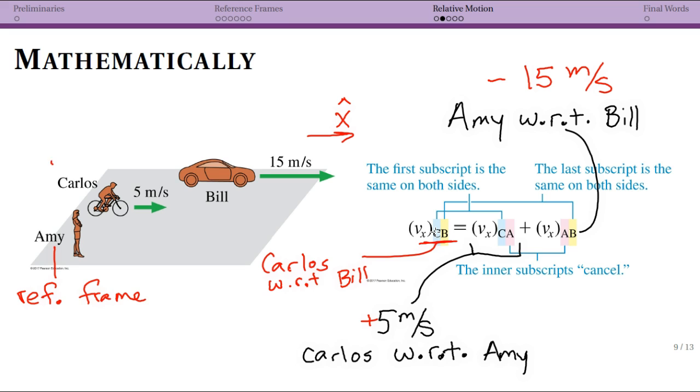Now if I just look at this picture, right, Carlos with respect to Bill—let's see. So Bill is moving to the right at 15. Carlos is moving to the right at five. So if Bill was to look backwards at Carlos, it would look like Carlos is moving to the left at negative 10 meters per second.